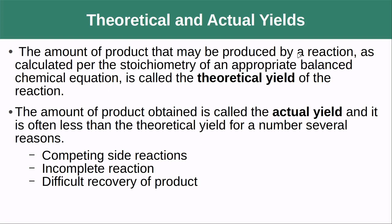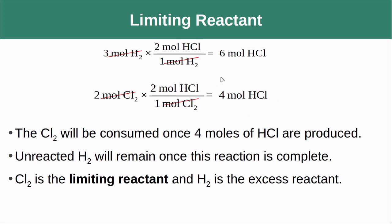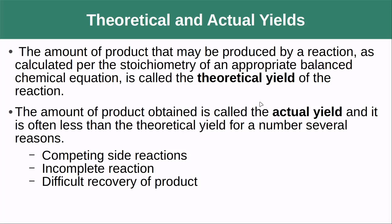Since we're on the theme of talking about things being less than ideal, we're going to talk about yields — theoretical versus actual yields. Back in our example, I saw that my maximum yield, given the reagents that I had, was going to be four moles of HCl. That is what we would consider the theoretical yield — the one that we calculate from the stoichiometry of the balanced chemical reaction. In practice though, you're not going to see this theoretical yield. You're going to get some amount that's less than that — what we call the actual yield. There are a lot of different reasons why you won't get there: competing side reactions, an incomplete reaction where things didn't go all the way to products and some reactants remained, or just a difficult recovery of the product where you might have trouble getting it out of the reaction mixture.